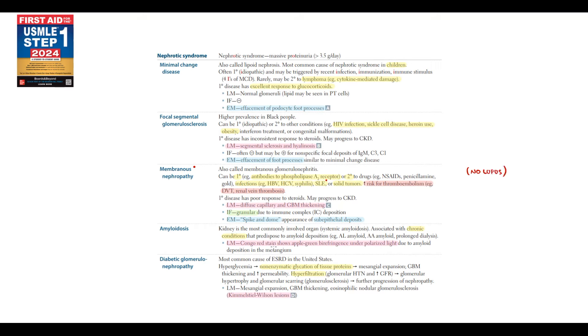For diabetic nephropathy, patients should have diabetes. In this case, patients do not have diabetes. So it's definitely not diabetic nephropathy. Minimal change disease is the most common cause of nephrotic syndrome in children or in patients with Hodgkin lymphoma. Nothing of this is present. But what patient has is a history of hepatitis B infection.